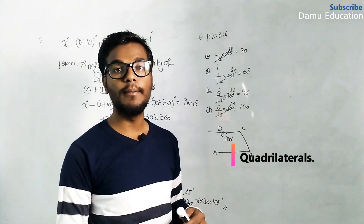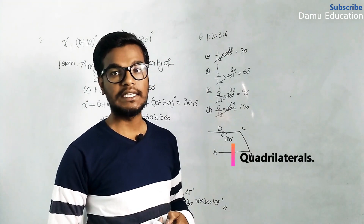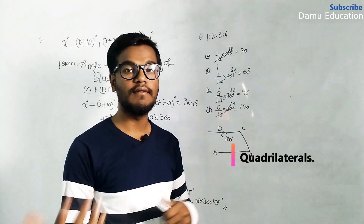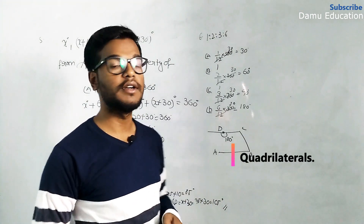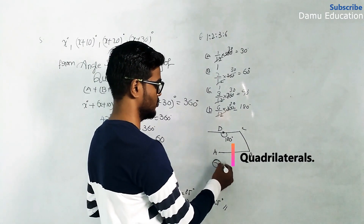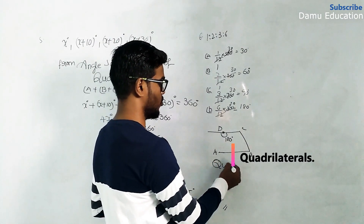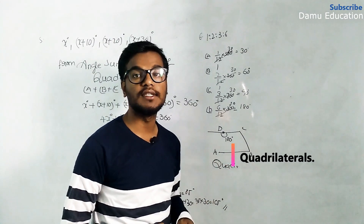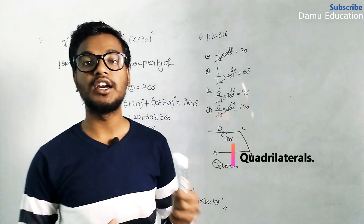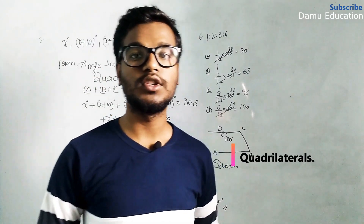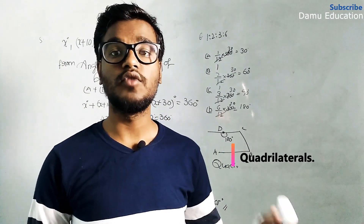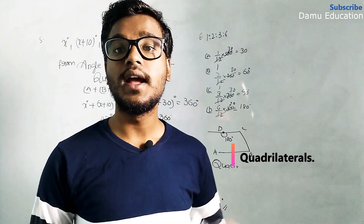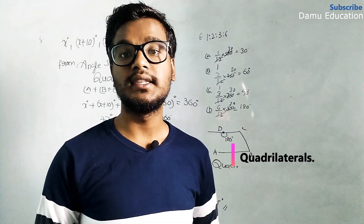Since 180 degrees makes a straight line, the angle should be less than 180 degrees for the sides to join and form a quadrilateral. Therefore, a quadrilateral is not possible with the given ratio of angles. Thanks for watching this video — if you have any doubts, please comment below and please subscribe.